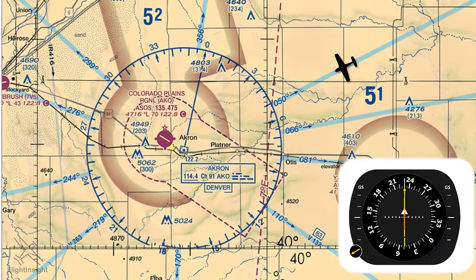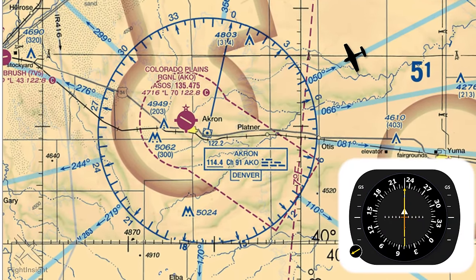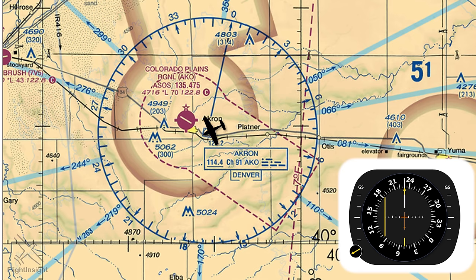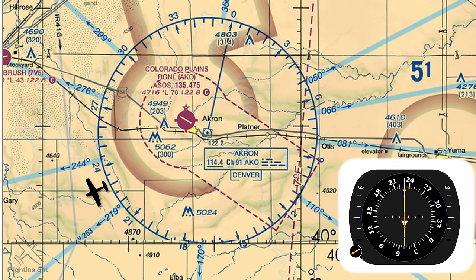Now we'll get closer to the VOR. Since we're flying to the station, that white triangle is pointed the same direction as our green arrow, which — just like on a VOR — is the TO indication. When we fly over the station, this triangle will flip from TO to FROM. Notice how the white triangle is now pointed the opposite direction from the green arrow.